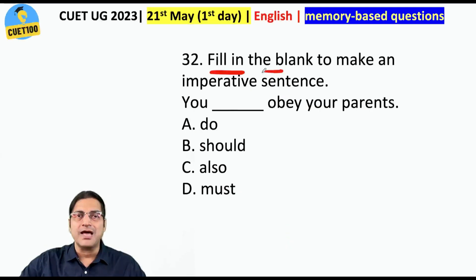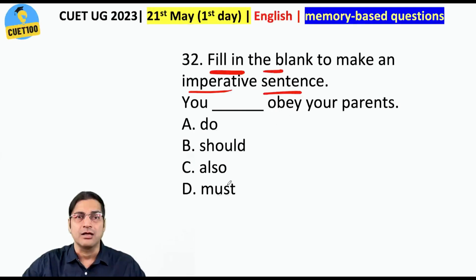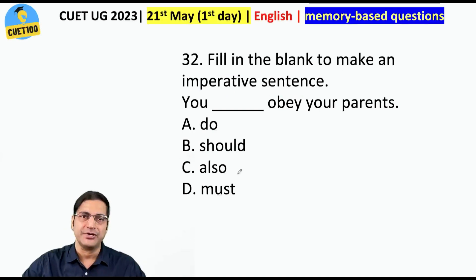Fill in the blank to make an imperative sentence. When we say imperative, that is almost commanding. 'You do obey your parents' — no, that's a habit. 'You should obey your parents' — not commanding. 'You must obey your parents' — yes, this is imperative. Your answer should be 'must.'